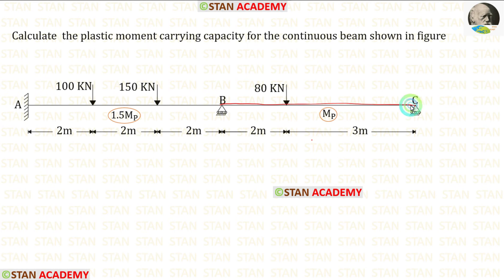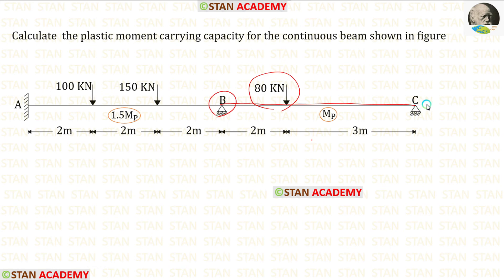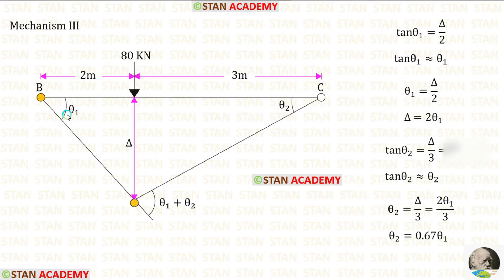Now let us take span BC and form the third mechanism. In span BC, at joint B there will be a plastic hinge, and under the point load 80 kN there will be a plastic hinge. At point C, there will be no plastic hinge because it is a simply supported end. Let us keep this angle as theta 1, this angle as theta 2, so this angle should be theta 1 plus theta 2.